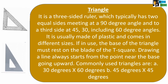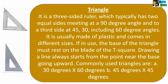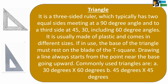Triangle: it is a three-sided ruler which typically has two equal sides meeting at a 90-degree angle and a third side at 45, 30, and 60-degree angles. It is usually made of plastic and comes in different sizes. When in use, the base of the triangle must rest on the blade of the T-square, and drawing a line always starts from the point near the base going upward. Commonly used triangles are: A — 30 degrees by 60 degrees, and B — 45 degrees by 45 degrees.